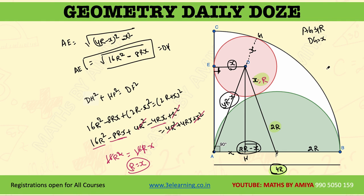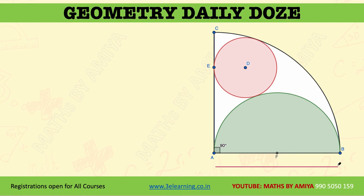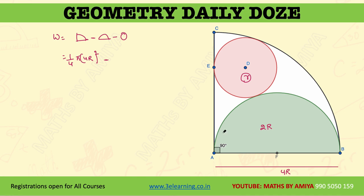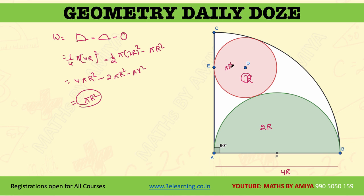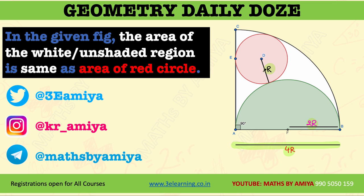Now let's prove that the area of the white portion equals the area of the red circle. With quarter circle radius 4r, semicircle radius 2r, and red circle radius r: Area of white = (1/4)π(4r)² − (1/2)π(2r)² − πr² = 4πr² − 2πr² − πr² = πr². This equals the area of the red circle, πr². So both outcomes are proved: the radius ratio is 4:2:1, and the area of the white portion equals the area of the red circle.